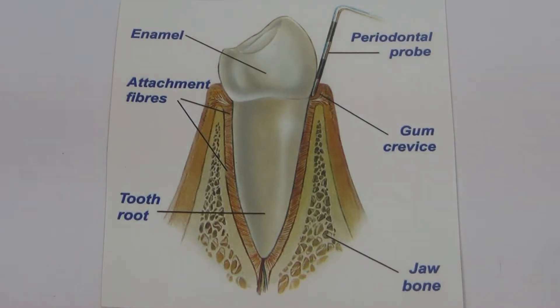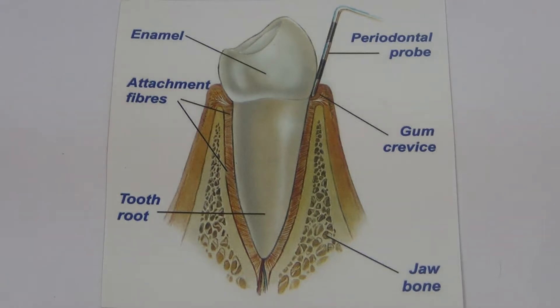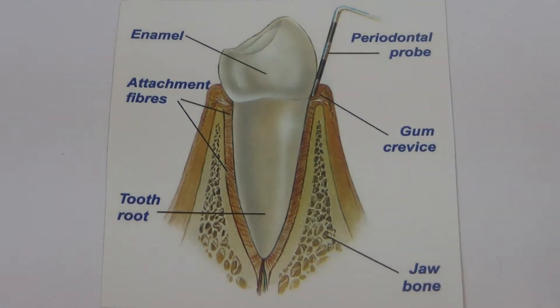Hey guys, this is Dr. Chetan and I am going to explain to you about the various stages of inflammation of gums. Basically these are divided into two, that is the gingivitis and the periodontitis.